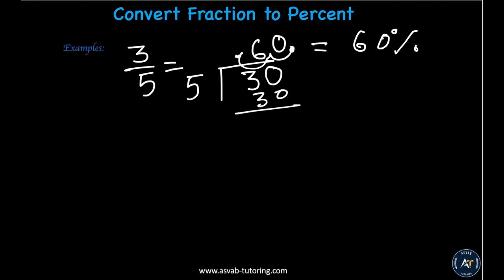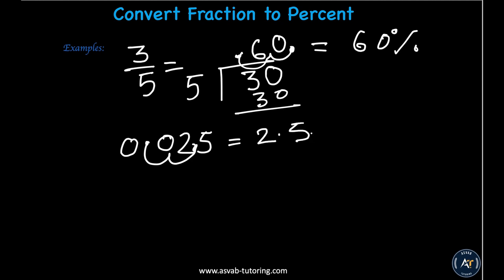Now for 0.025 as a percent: move two decimal places from left to right — one, two — and that gives you 2.5 percent.